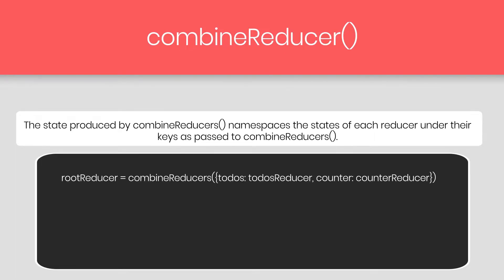I am going to create a root reducer and pass the Combined Reducer helper function to it. Inside the parenthesis, I am going to pass two reducer functions: first is a todo reducer and second is a counter reducer, both passed as an object. The Combined Reducer function will grab both reducer functions and create a single state object, and inside both objects we have different properties.